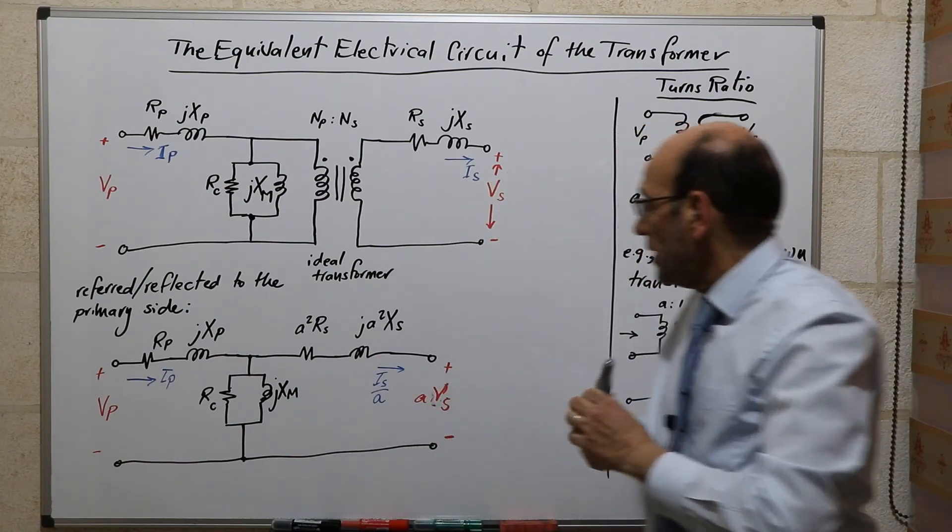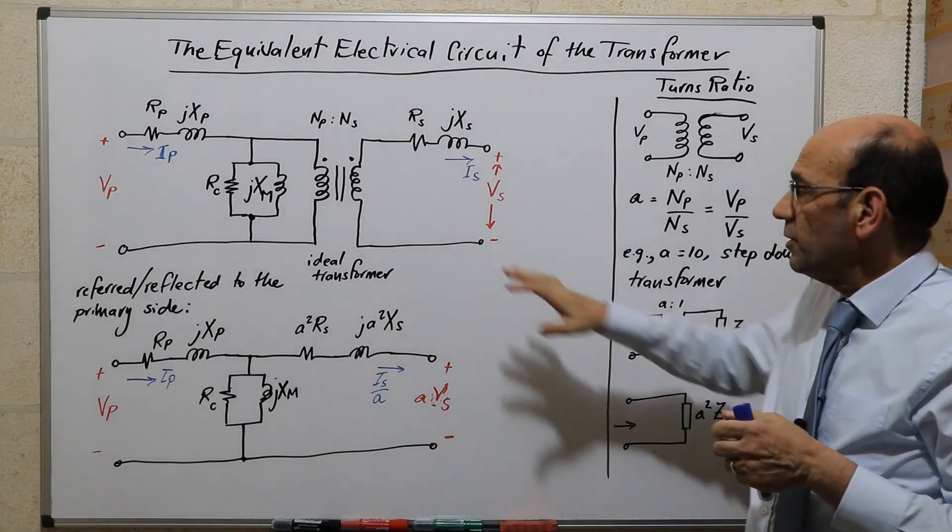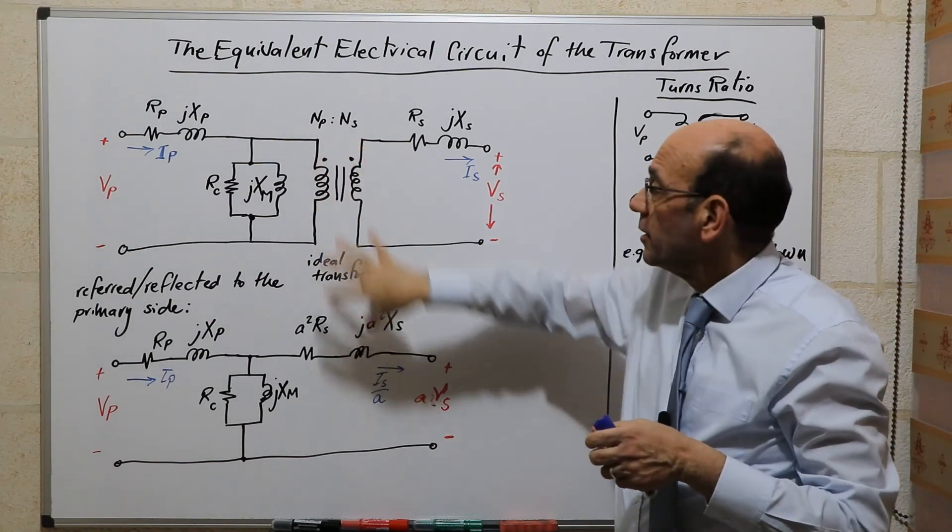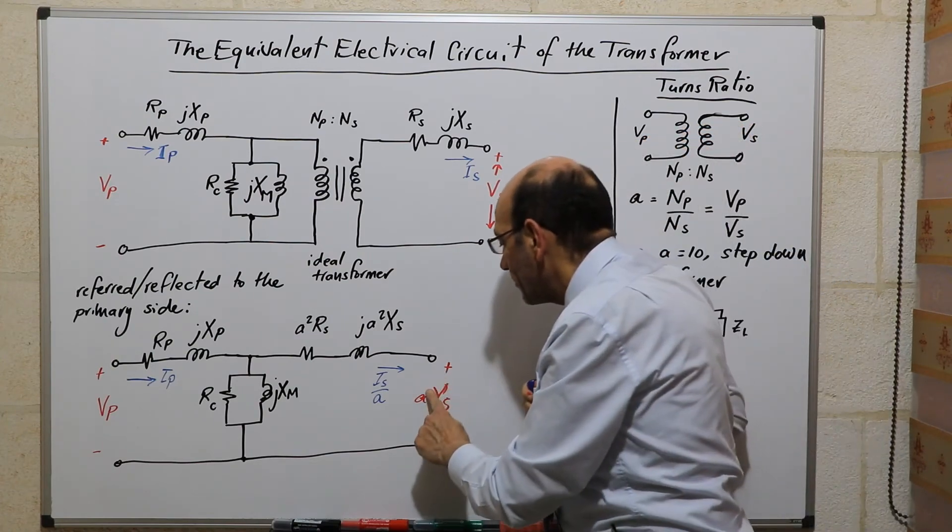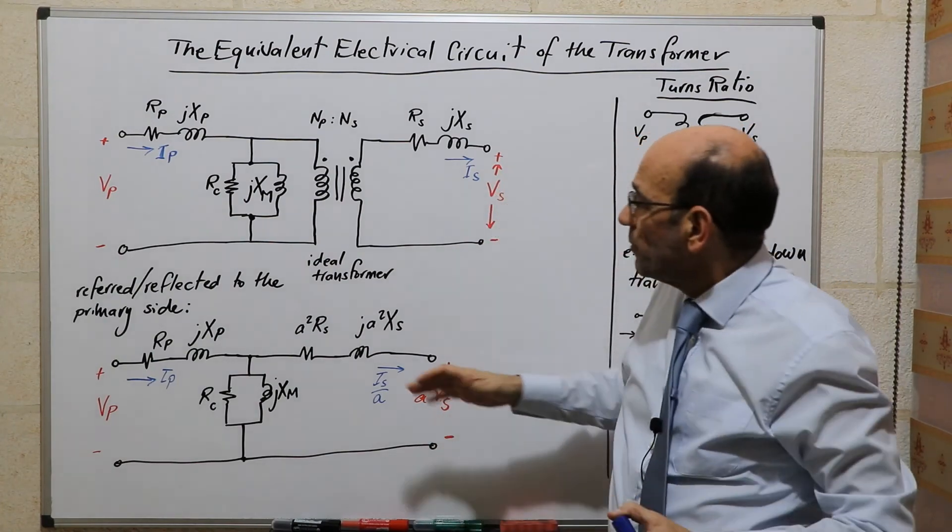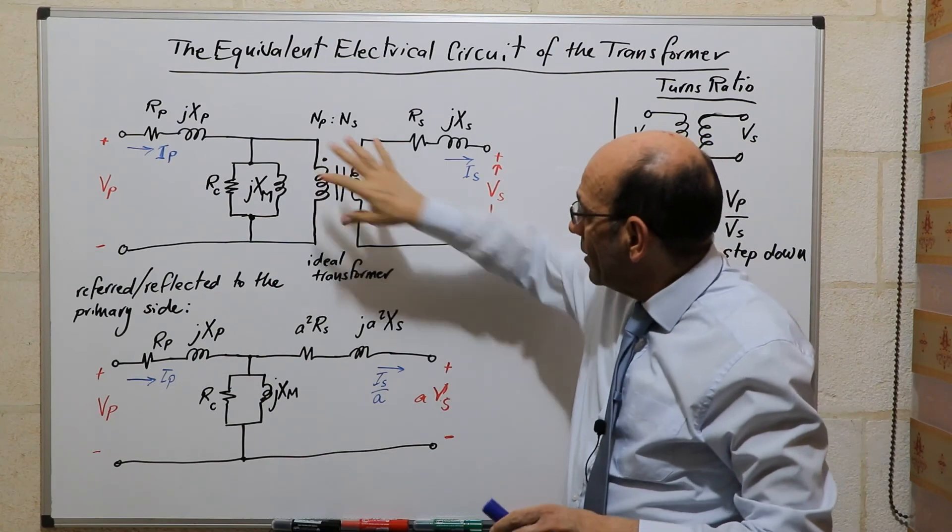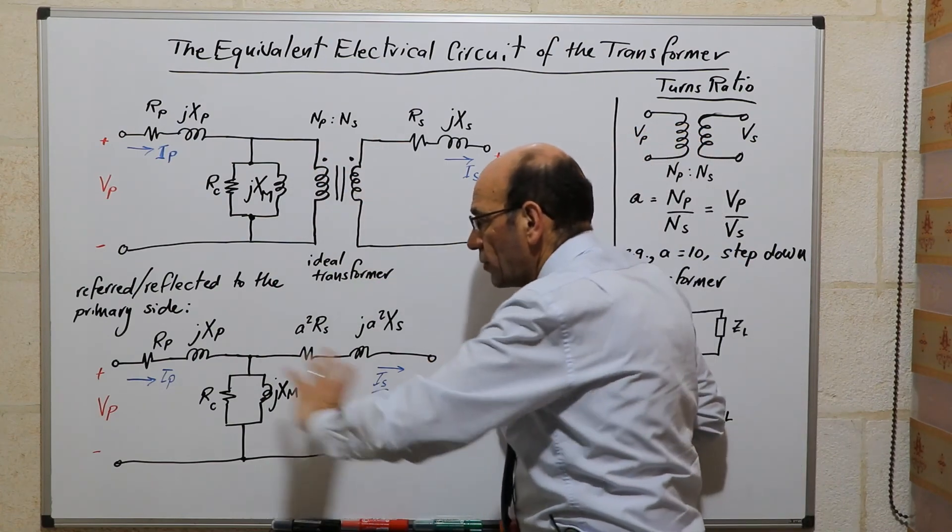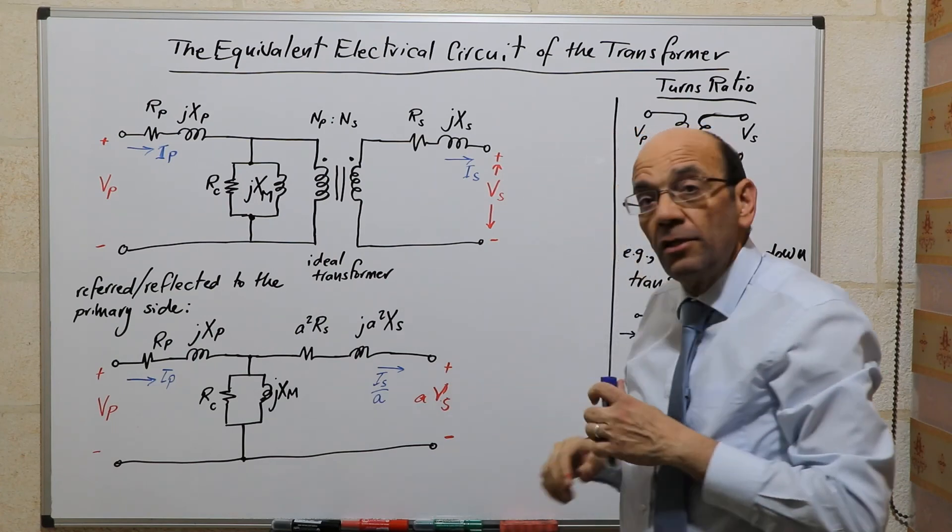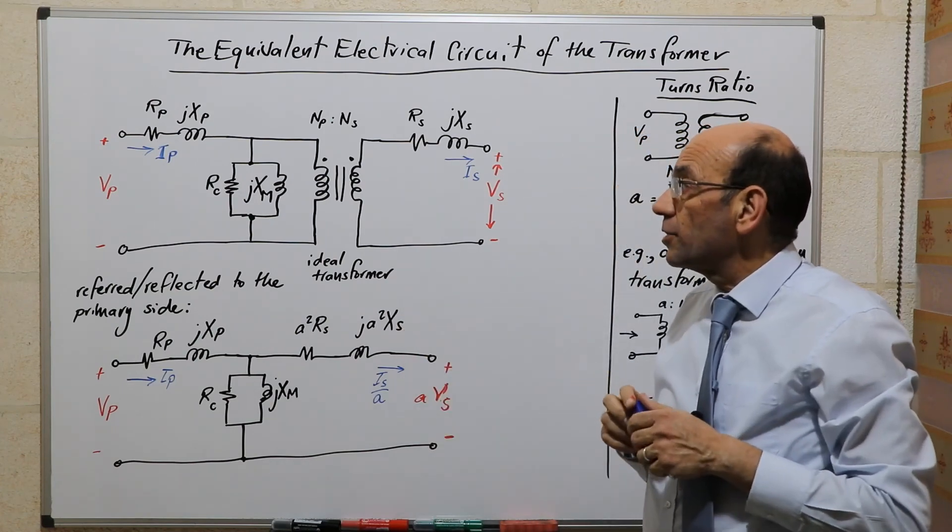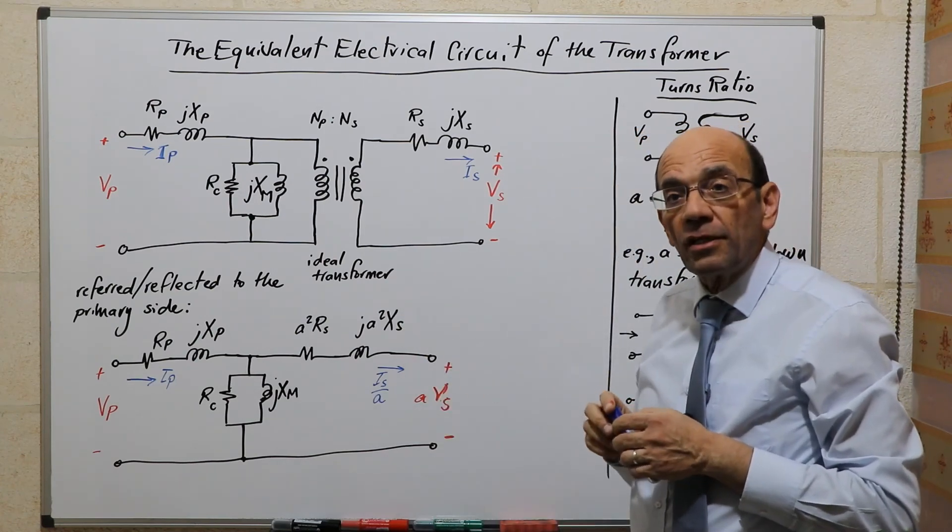And so this is actually the first simplification. We've removed the ideal transformer from here, and we've actually transformed this model. Now we don't have an ideal transformer, and we can compare the voltages here to the voltages here, and the currents here to the currents here. So this is the first simplification in the equivalent electrical circuit model.